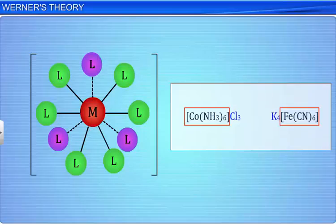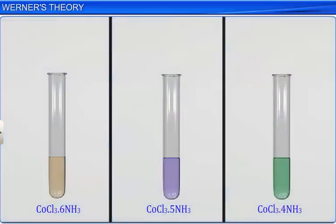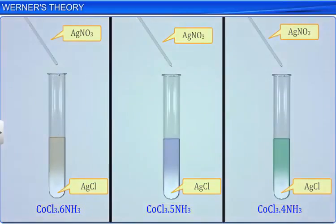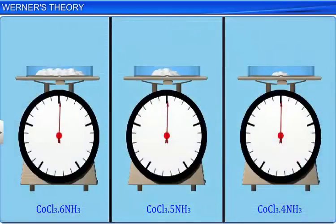The postulates of Werner's coordination theory were actually based on experimental evidence rather than theoretical. Werner treated cold solutions of a series of compounds of cobalt 3-chloride with ammonia with an excess of silver nitrate and weighed the silver chloride precipitated. The stoichiometries of the complex silver chloride formed were as shown here.